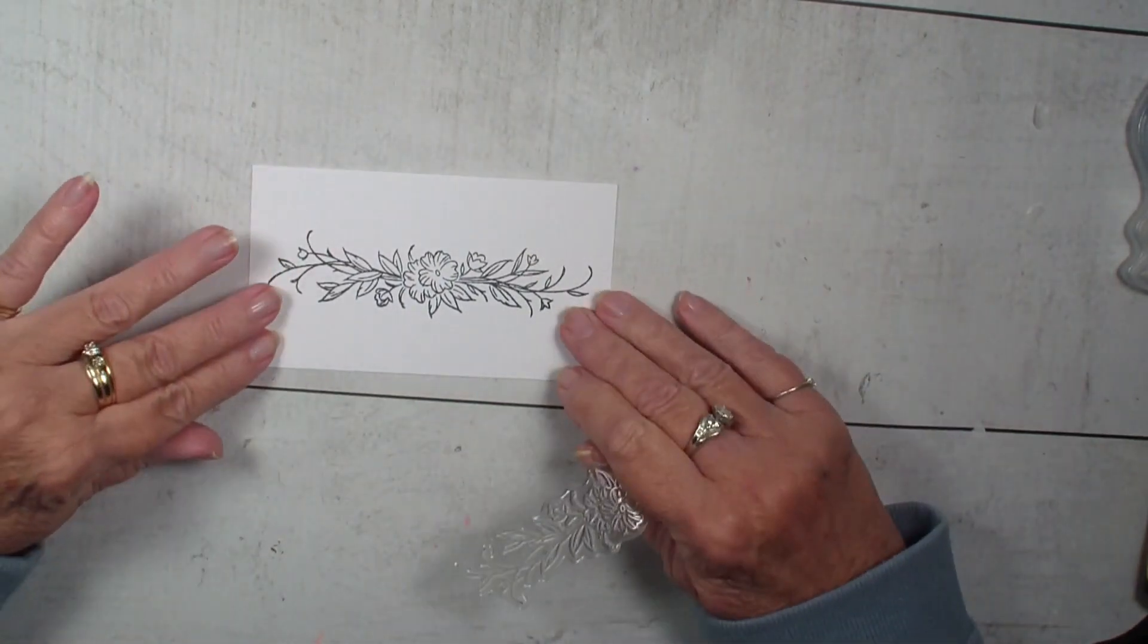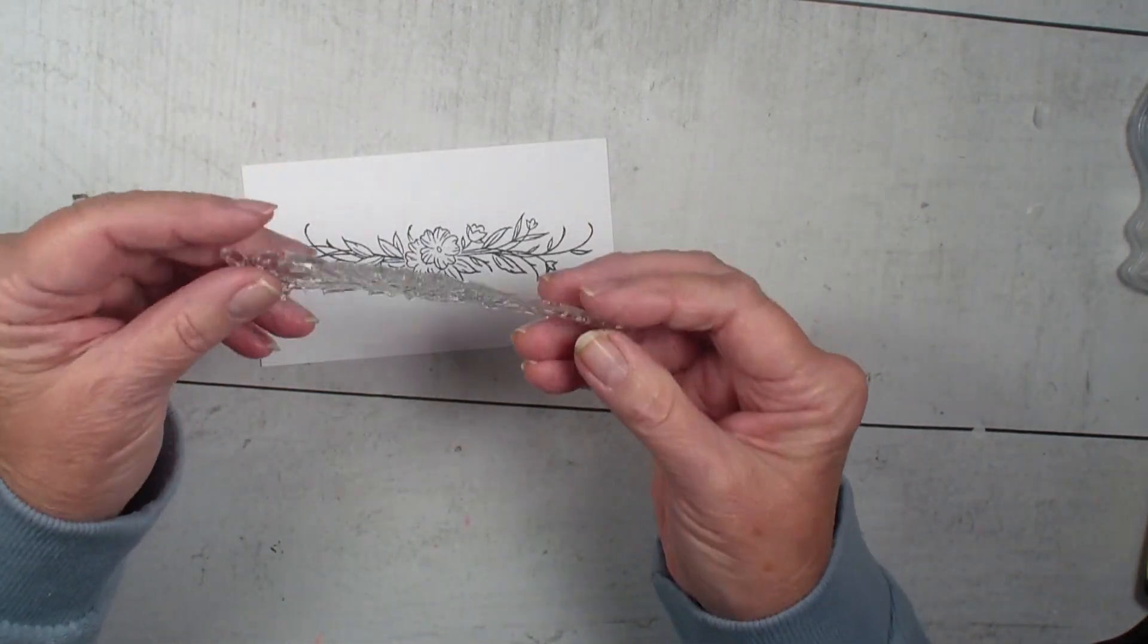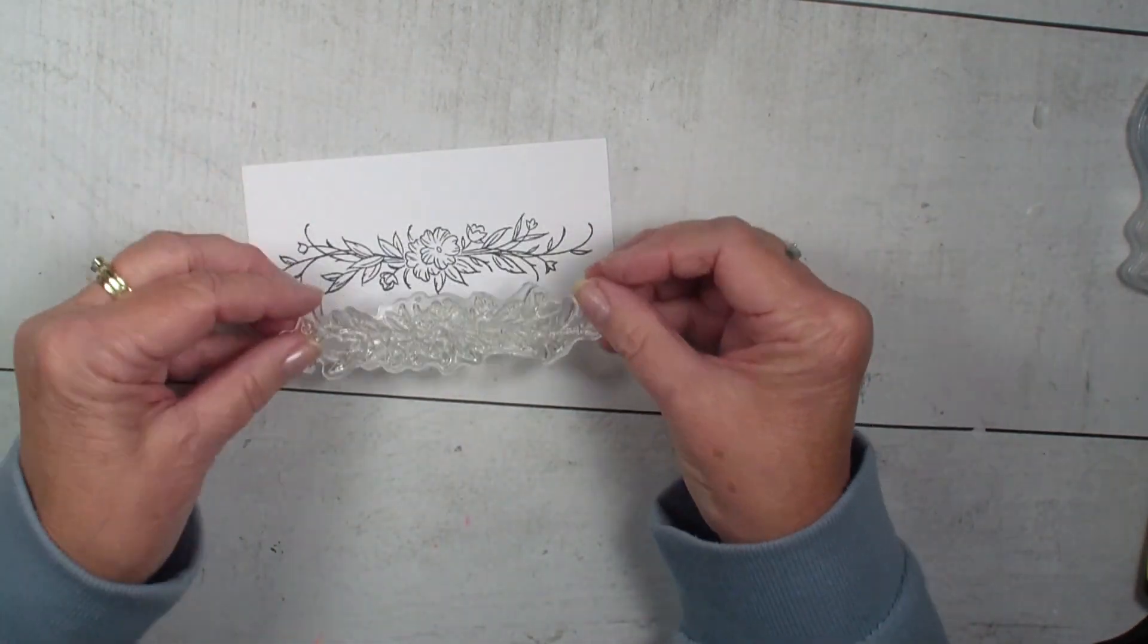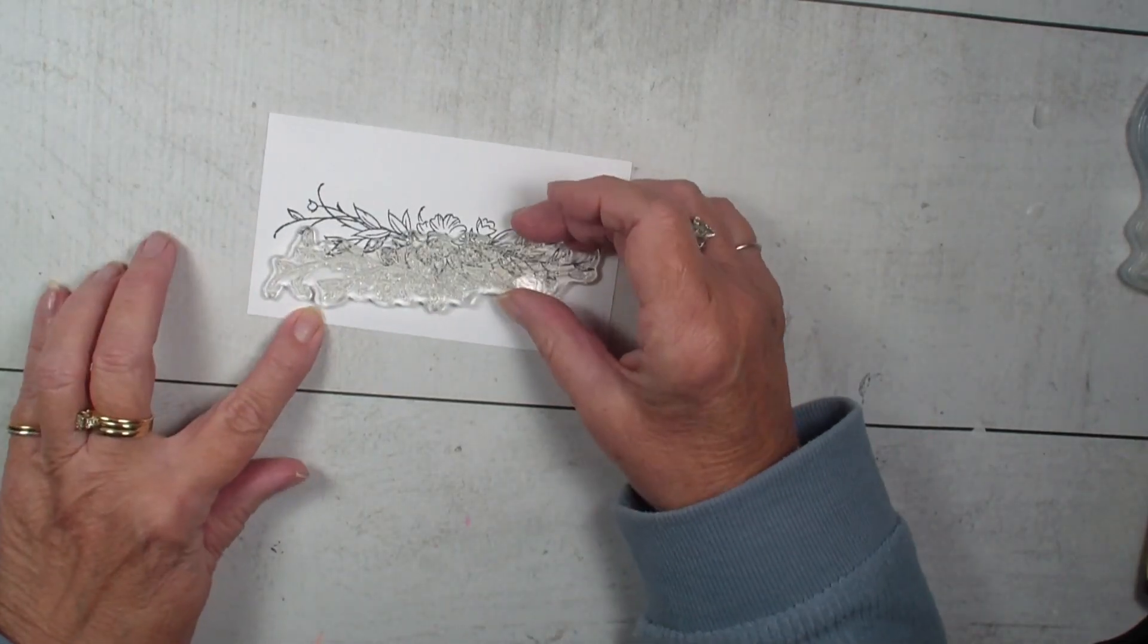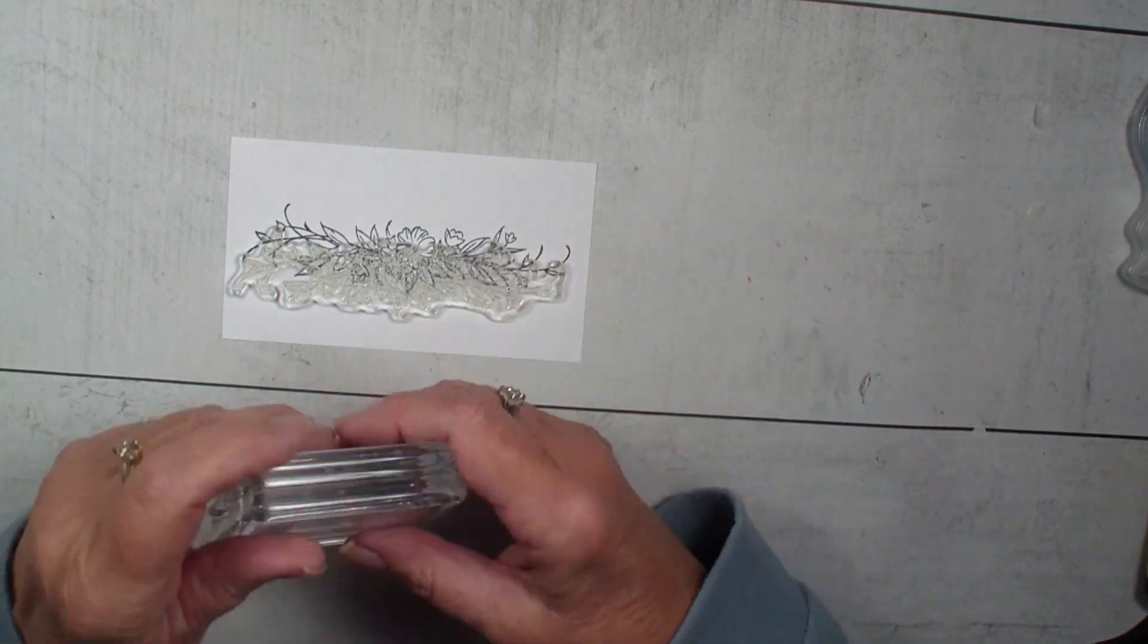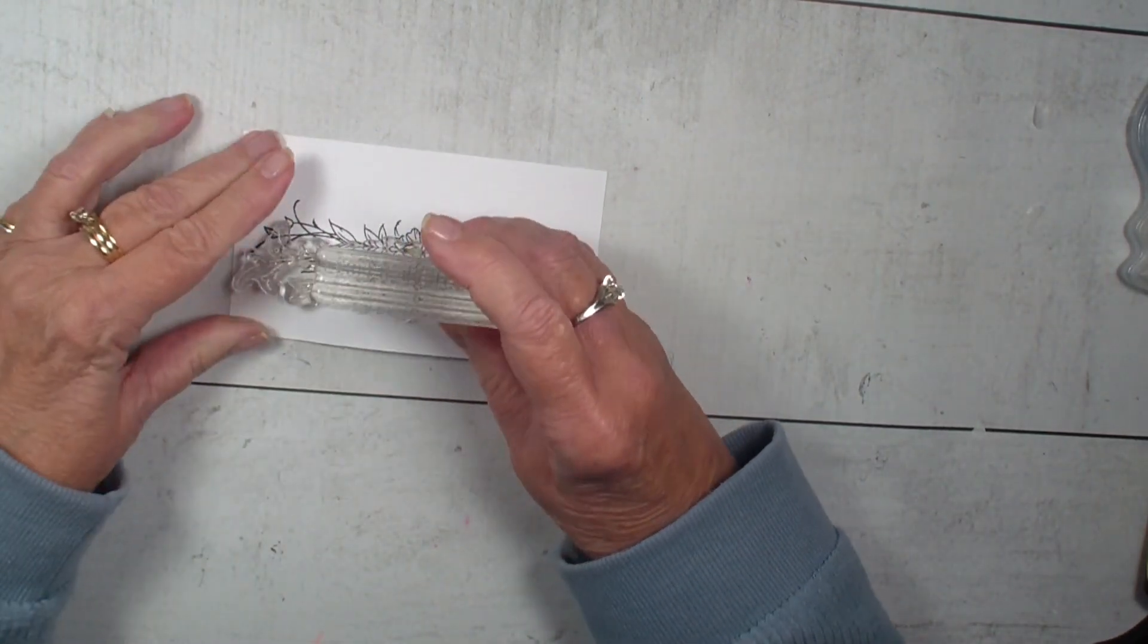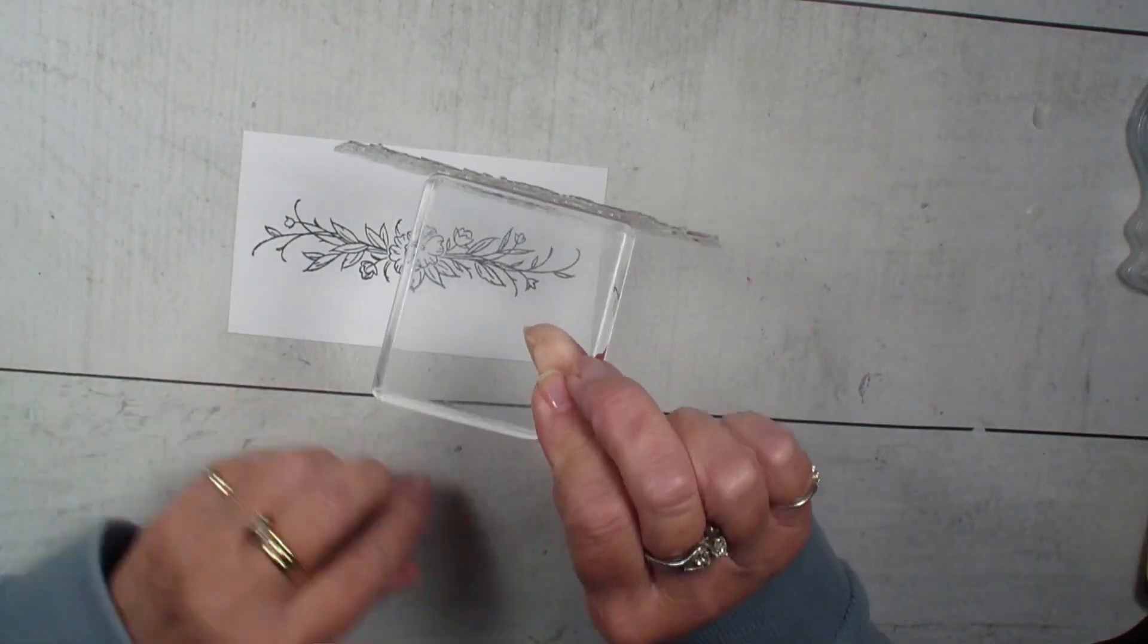So she stamps the photopolymer, then she turned the photopolymer over like so, but it kind of moves around if you don't anchor it down. So what she did was take her clear block and mount it on here.